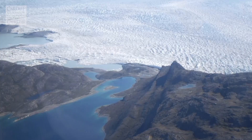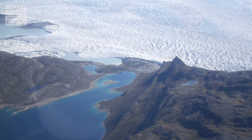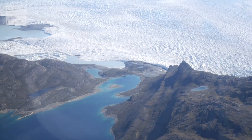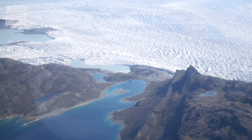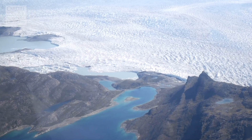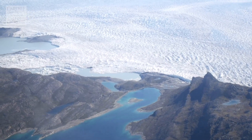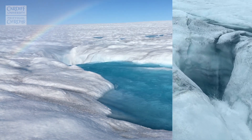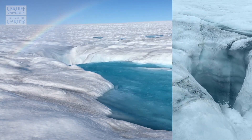We're seeing very big changes in glacial melting across the world at the moment. As you get warming temperatures, you get an increase in meltwater production on the ice surface. We know that that meltwater has to go somewhere and we want to know what's happening to the melt.